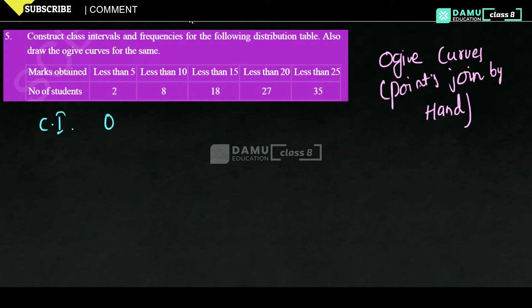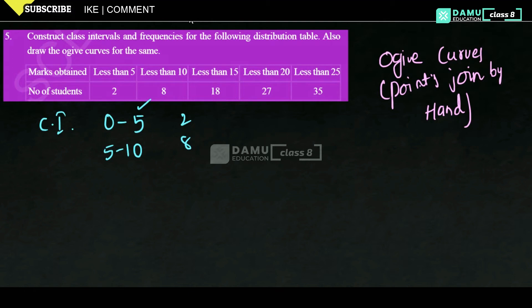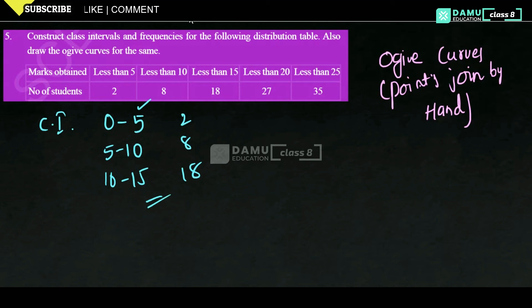So let's take marks obtained. We have to find the class intervals. Less than 5 will give us 0 to 5, and less than 10 will give us 5 to 10. These are exclusive class intervals — the upper limits are excluded from the class intervals. Less than 15 gives 10 to 15, and so on.